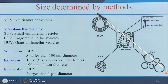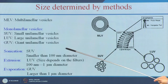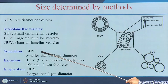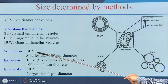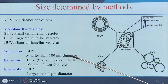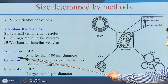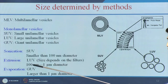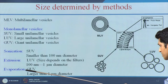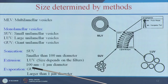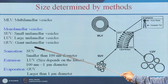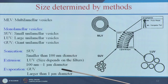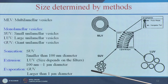The size of liposomes is determined by the preparation method. For example, sonication gives SUVs smaller than 100 nanometers in diameter; extrusion gives LUVs; and the evaporation method gives GUVs — giant unilamellar vesicles — larger than 1 micrometer in diameter. So the size varies depending on the preparation method.